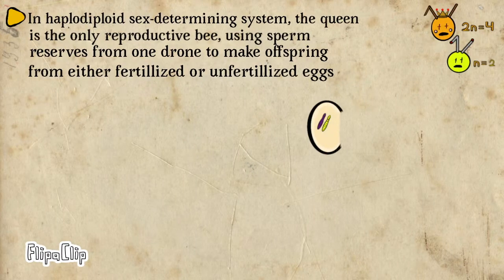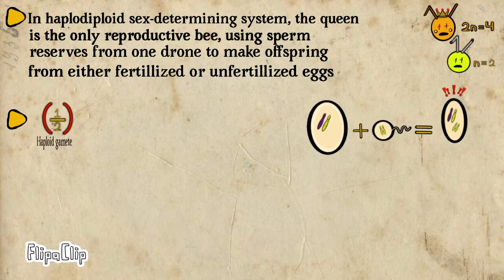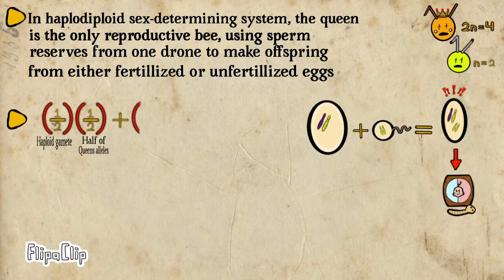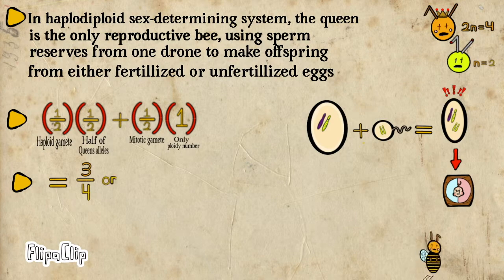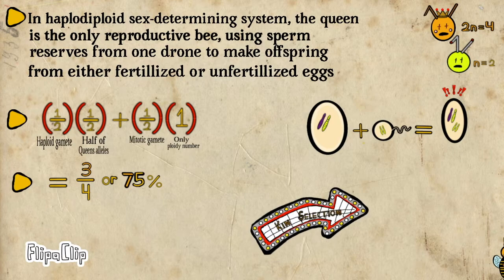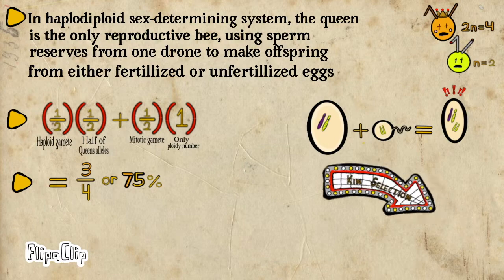However, in a haplodiploid system, the queen is the only reproductive individual, monogamously using sperm reserves from a single drone bee to make offspring from either fertilized or unfertilized eggs. The diploid queen will give a gamete with half of her alleles to the developing zygote, while the haploid drone will contribute the other gamete consisting of 100% of its genetic makeup. This results in a closer 75% genetic relatedness between siblings, which allows kin selection to factor into the evolution of eusociality.